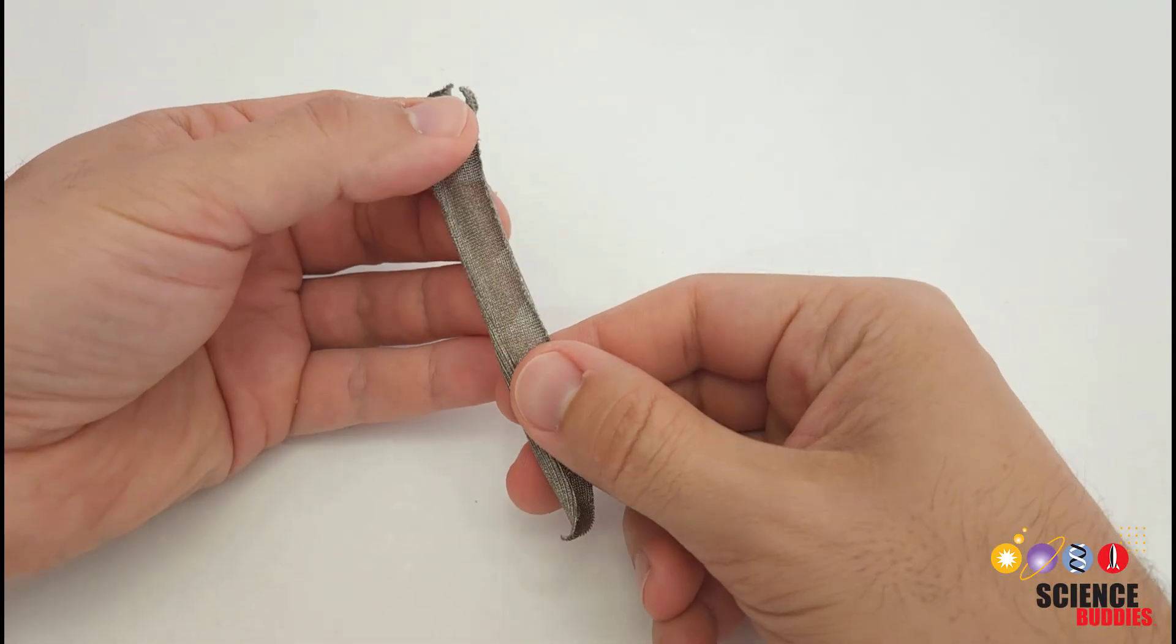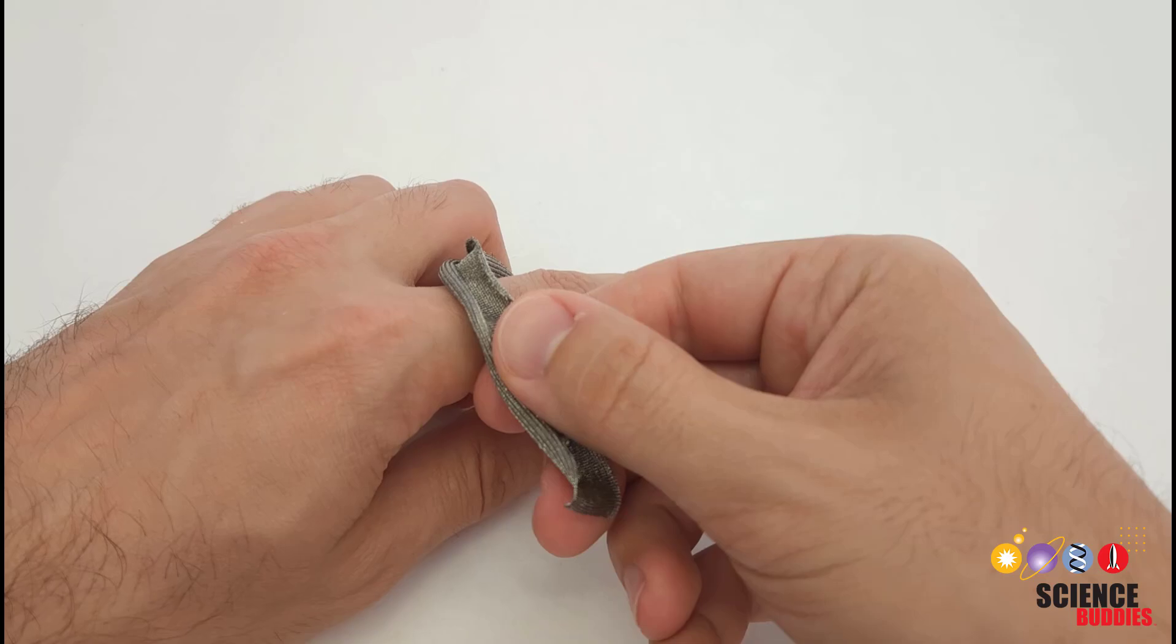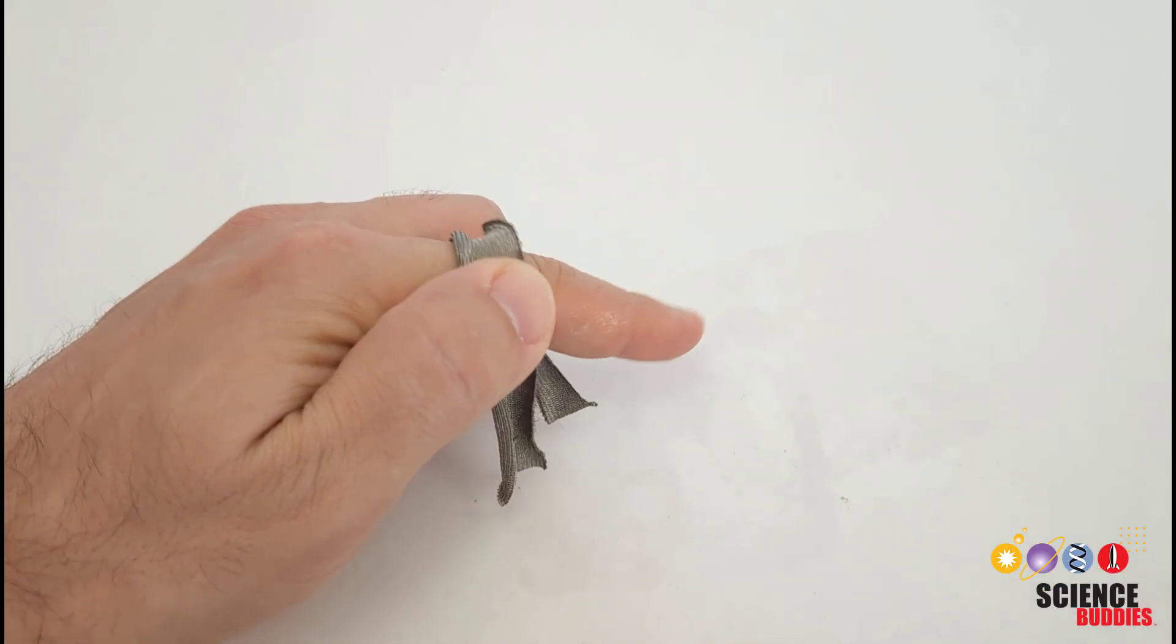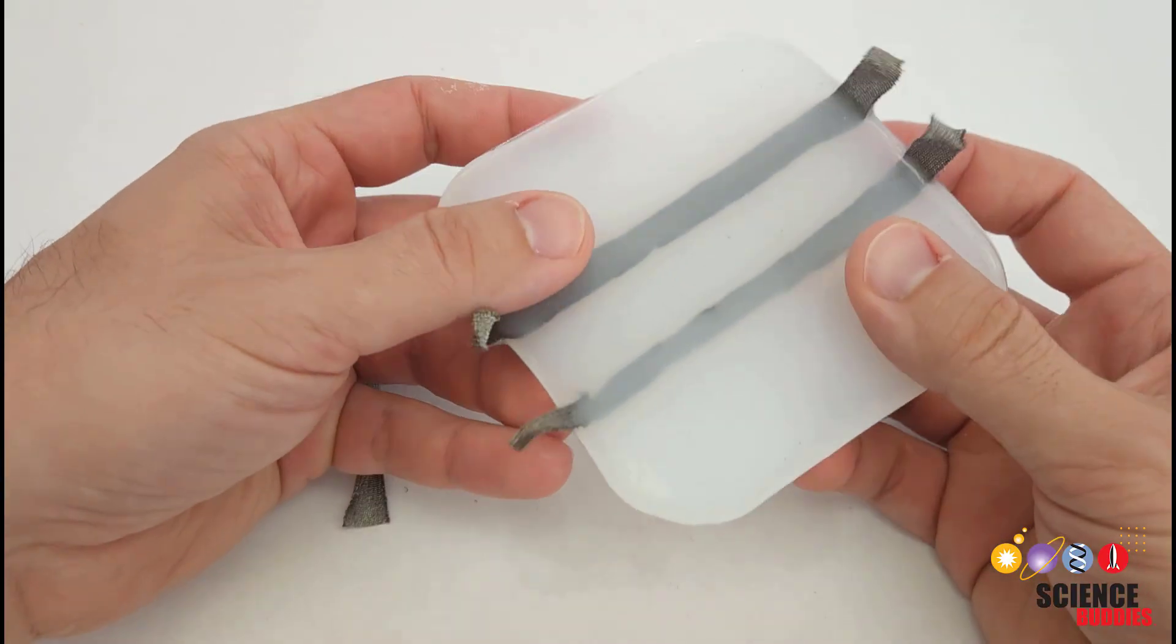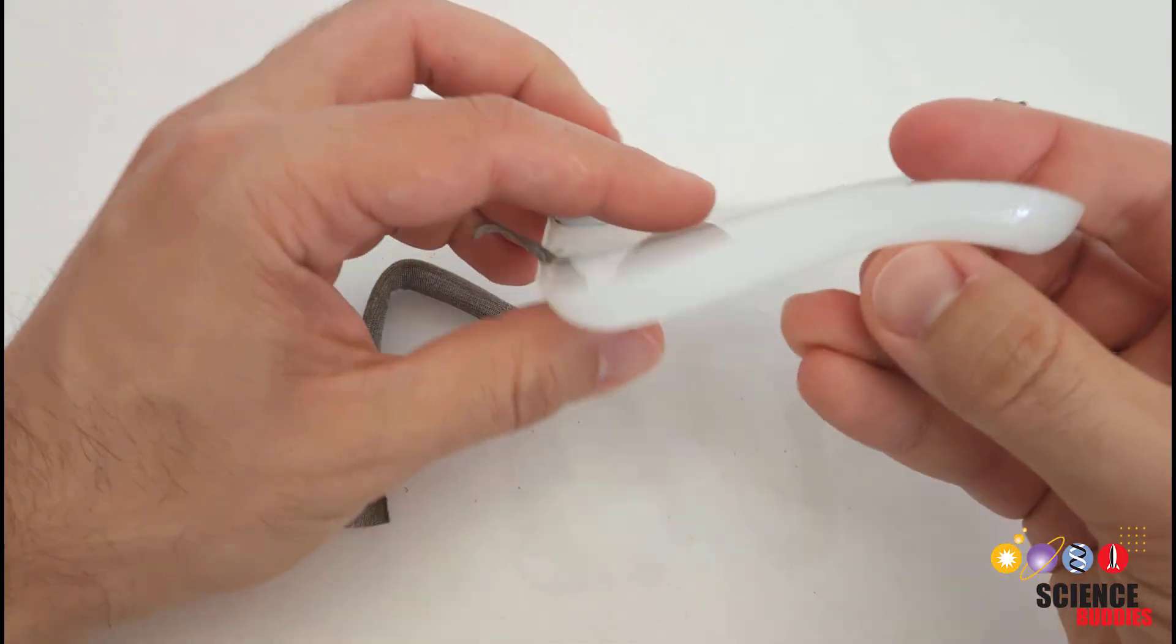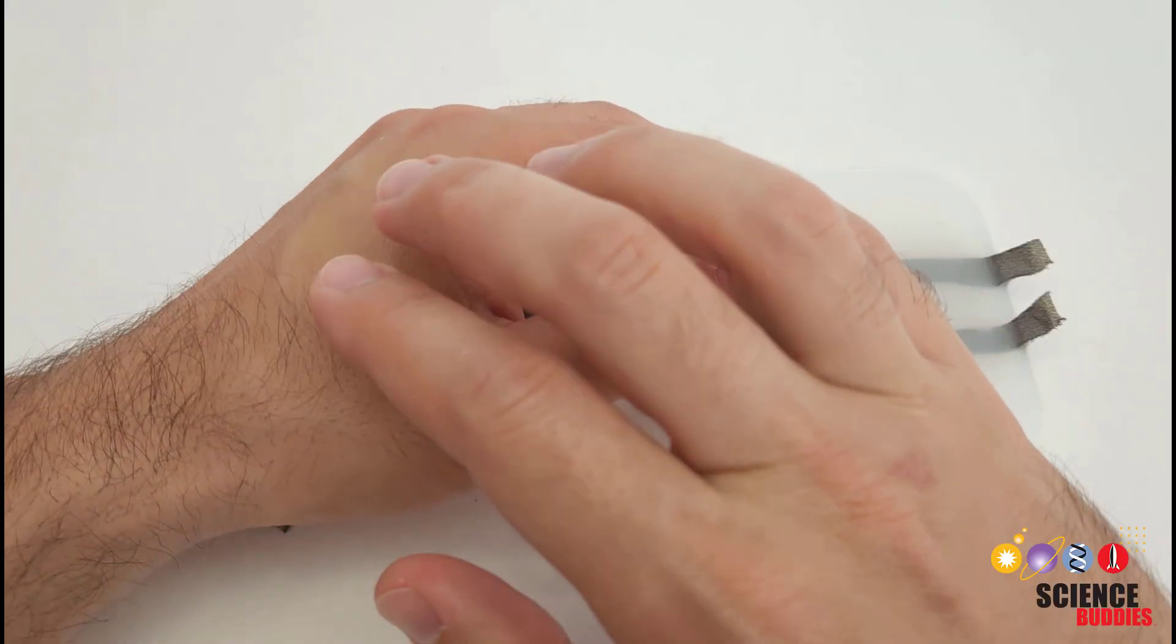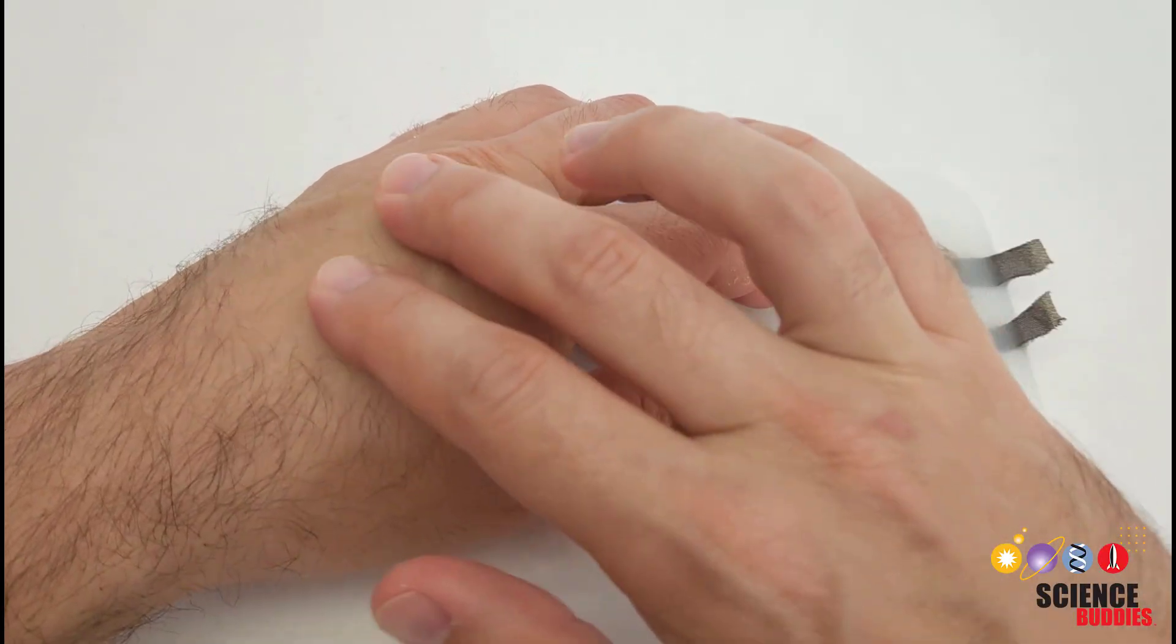Now, since this fabric is conductive, we can't use it directly on the outer layer of a robot because that would make it vulnerable to short circuits. That's why we're going to embed it in the electrically insulating silicone to protect it. This makes it kind of like your skin, which has a protective outer layer and nerve endings underneath that can detect touch.